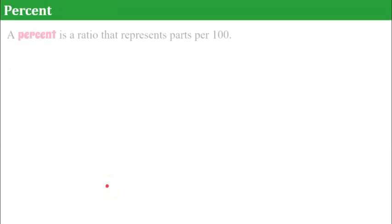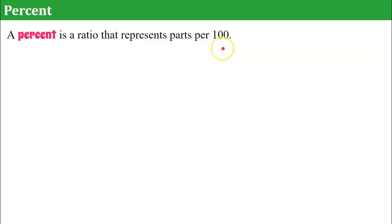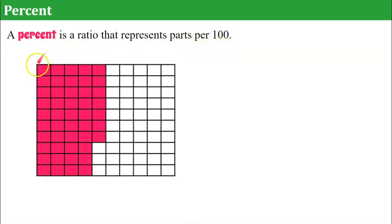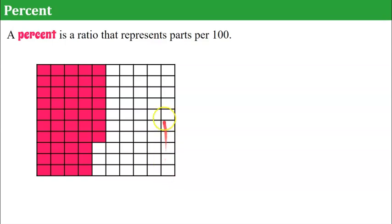Here's the definition of a percent. A percent is a ratio that represents parts per 100. Here is a hundreds grid — you probably used this a lot in your early elementary years. It's a grid that is 10 by 10, making 100 squares, so it's a perfect representation for percent.